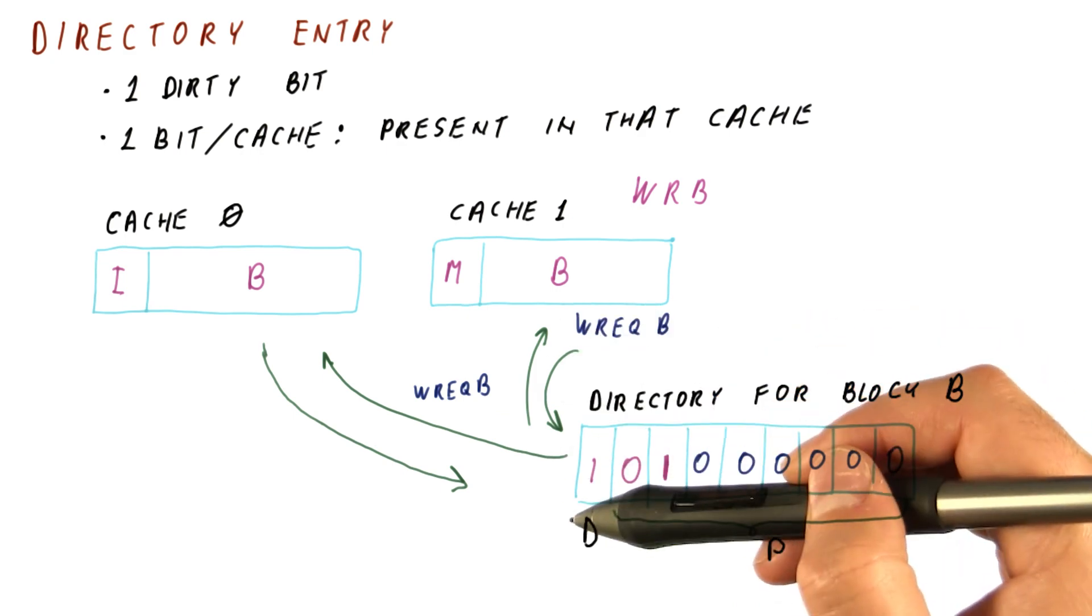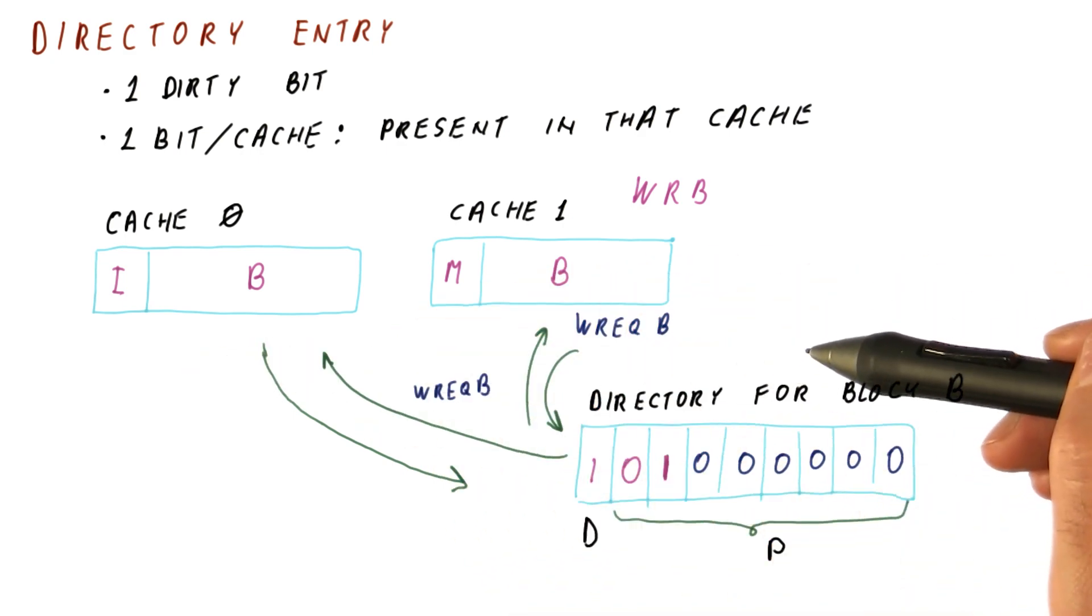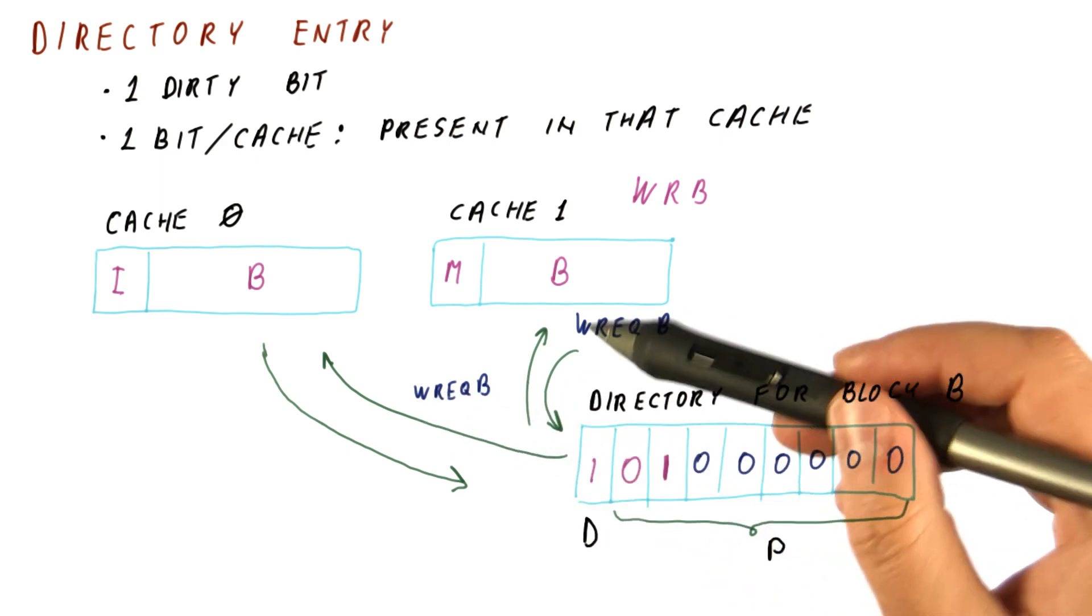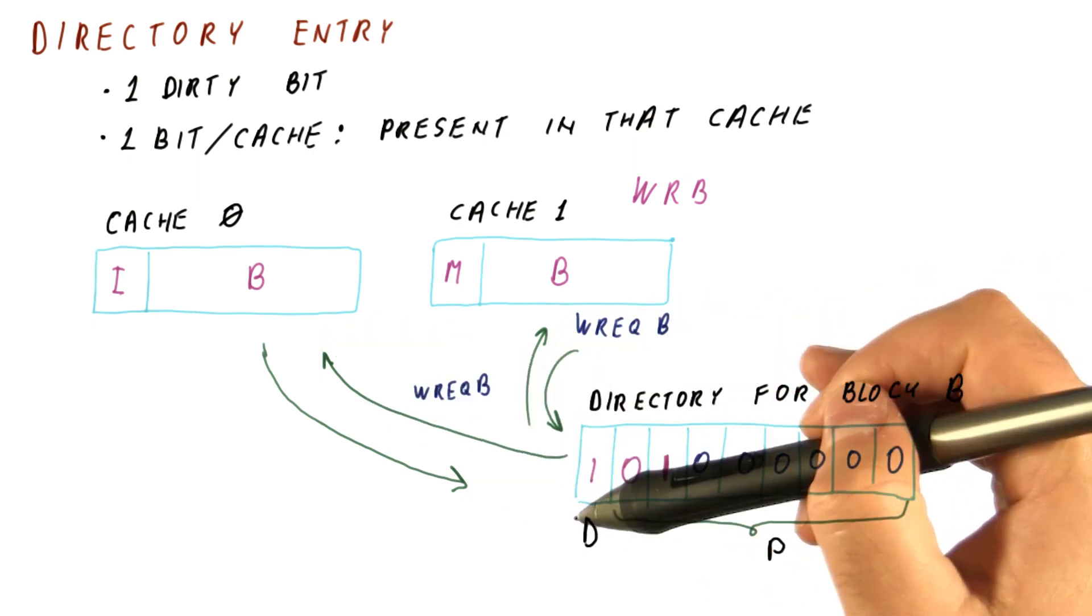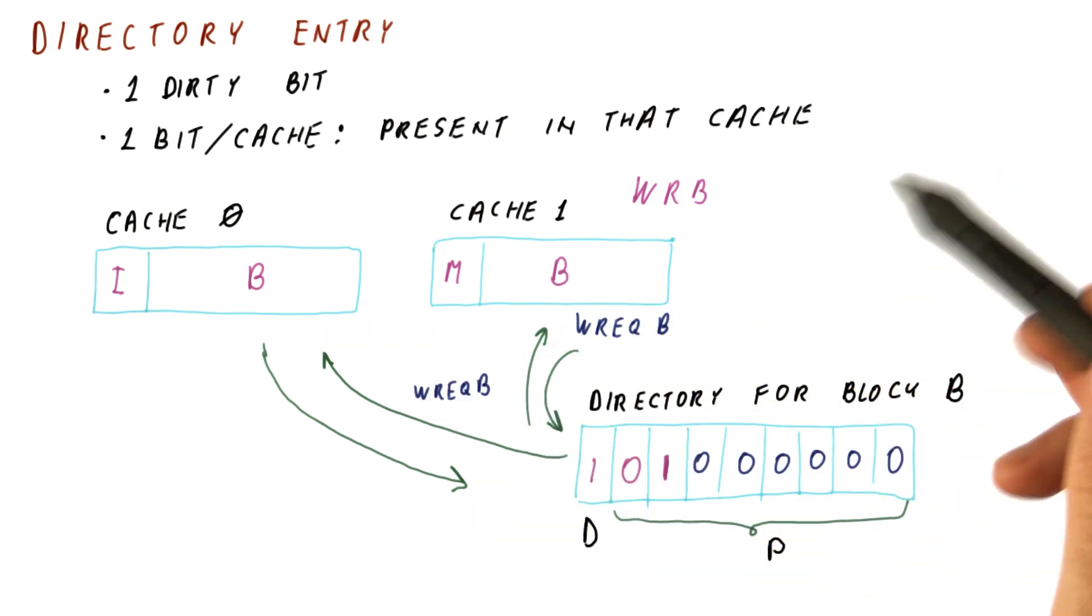In contrast, the bus would force us to basically broadcast to all of the cores. So this also saves a lot of bandwidth, because we're using point-to-point network links to send just this. Meanwhile, other cores could be doing something like this with another directory entry completely independently over a network.